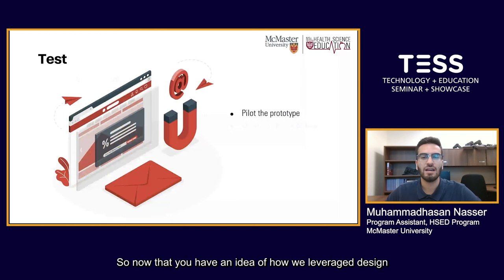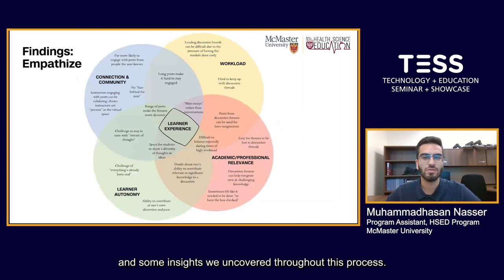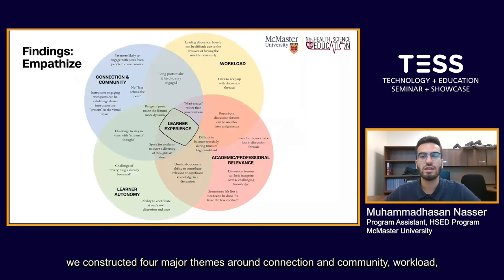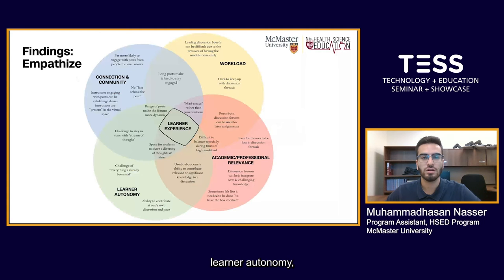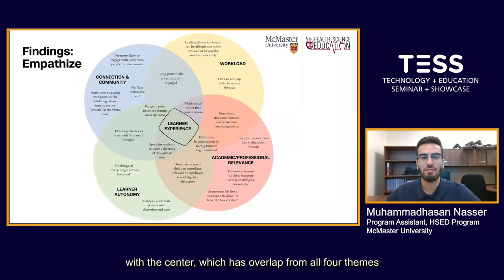Now that you have an idea of how we leveraged design thinking in the context of our program, I'd like to briefly explore our findings and some insights we uncovered throughout this process. When we filtered through our data from the Empathy stage with a specific focus on online discussions, we constructed four major themes around connection and community, workload, learner autonomy, and academic and professional relevance. We visualized this data in the form of a four-circle Venn diagram, with the center representing the holistic learner experience.